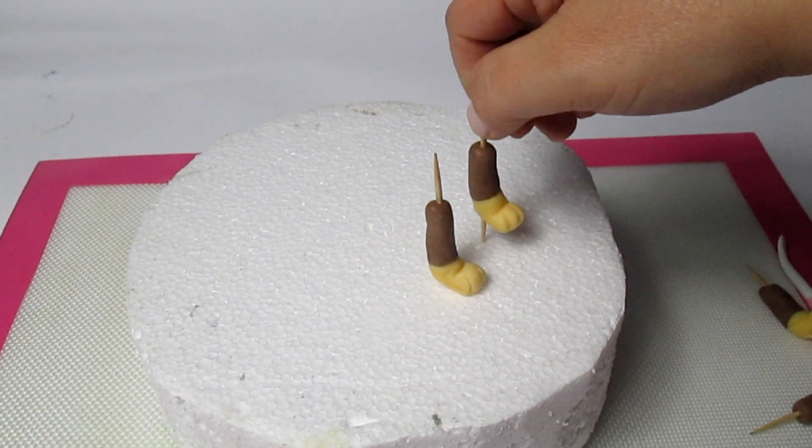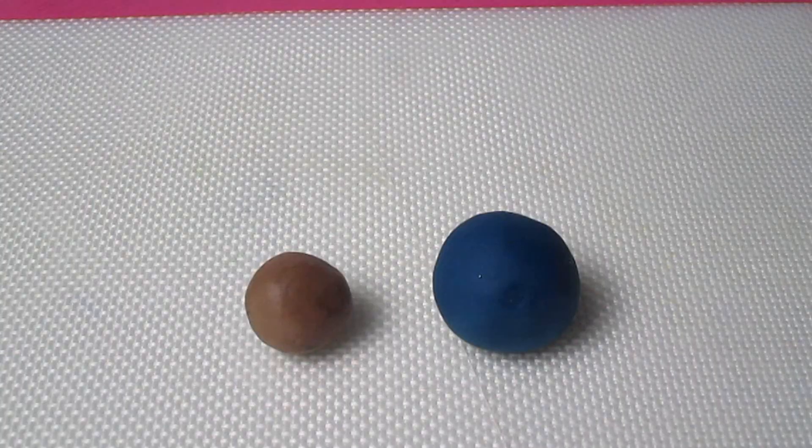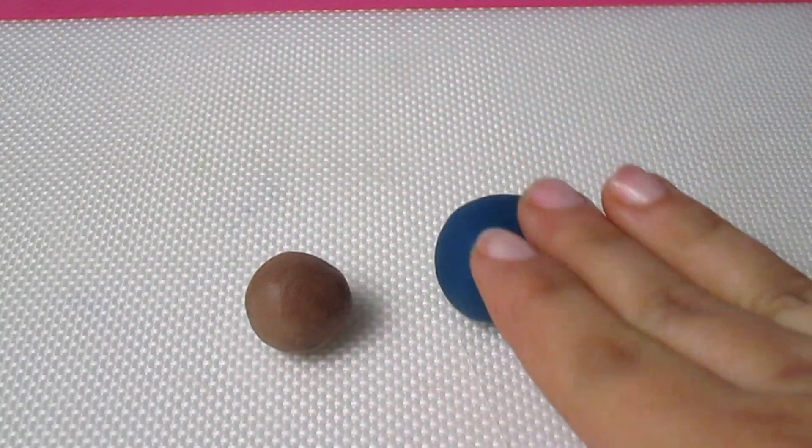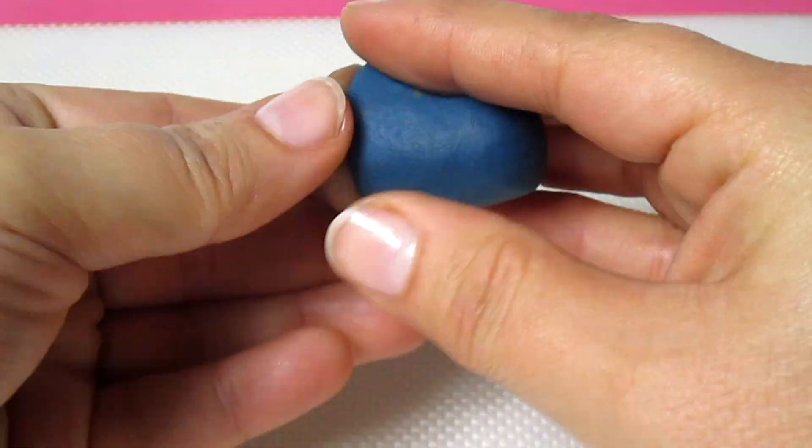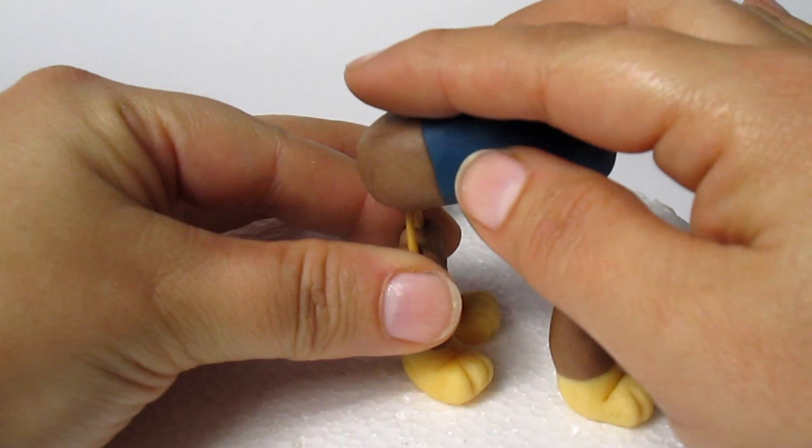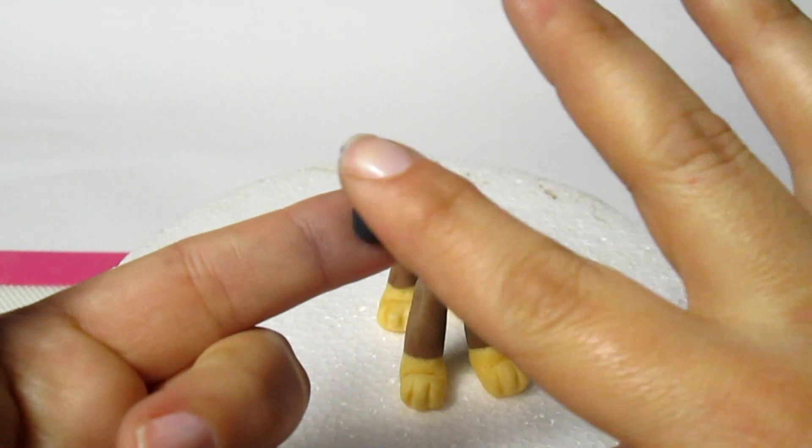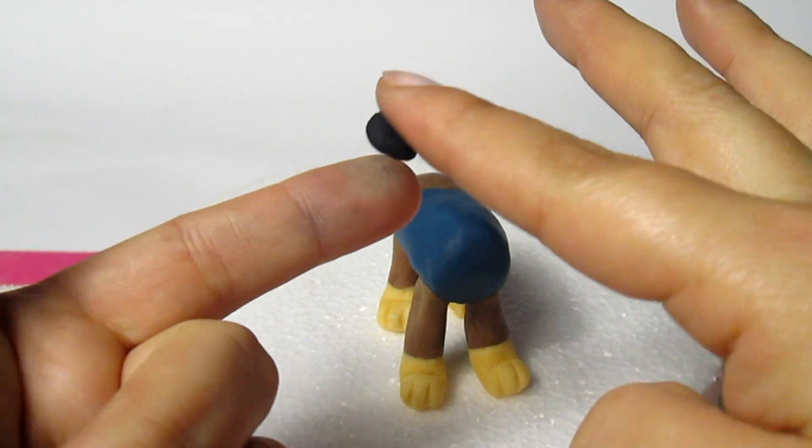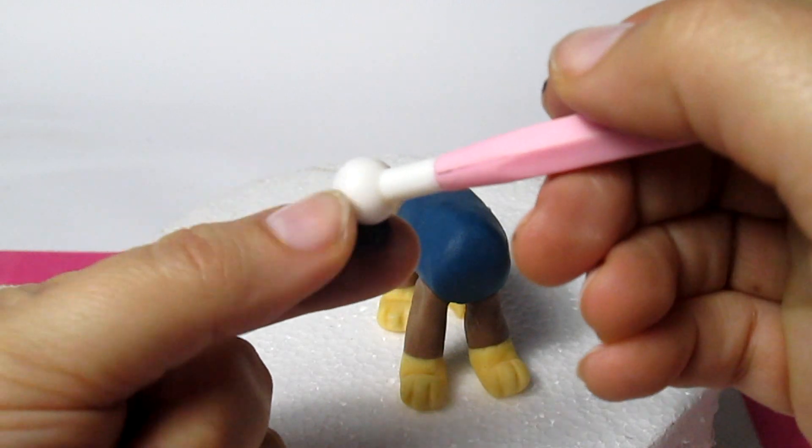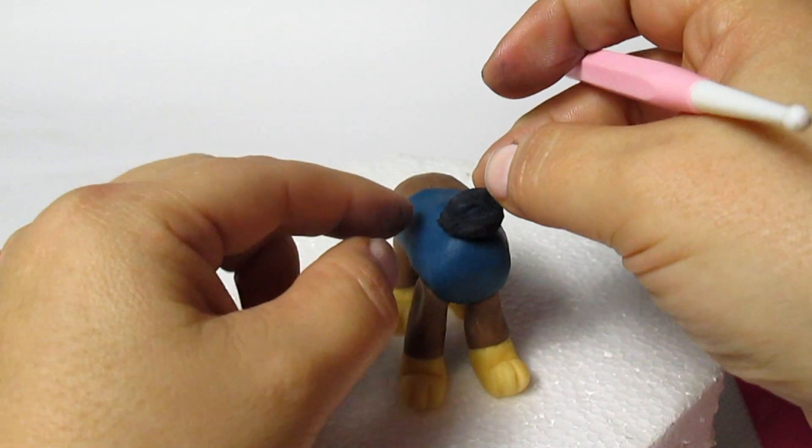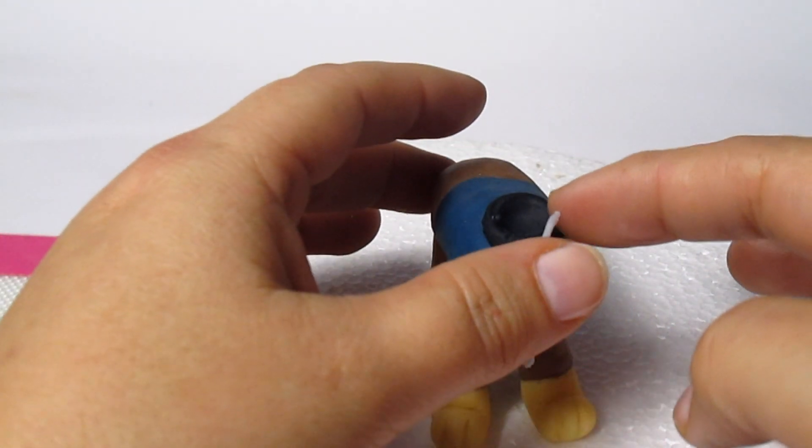To make the body, we are going to need some brown and some dark blue fondant. We need to stick them together and put them on top of the legs. For the collar, I've pressed the black ball of fondant and made a hole in the center with a ball tool and stick it on the body. Then I'm going to make a very thin strip and put it at the front of Chase's body.